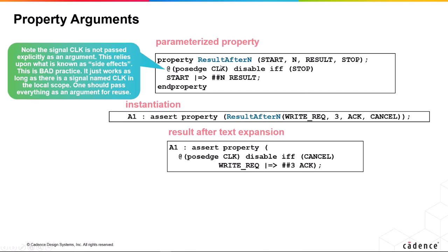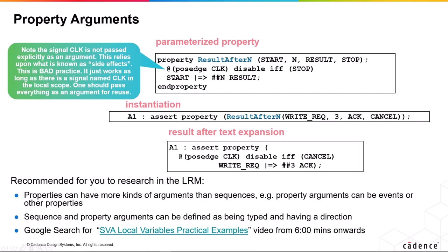Now notice in this case, clock is not passed as an argument. So this will work, this is still legal syntax and it will still work as long as there is a signal in local scope named CLK. So this is a bad idea. This is what's called side effects, we're just relying on that happening, which is bad practice. It makes things less reusable. I would strongly recommend that if you're going to write a parameterized property, that everything inside of here is passed as a parameter. You're not relying upon these local side effects, otherwise it'll give you reuse problems at some point in the future.